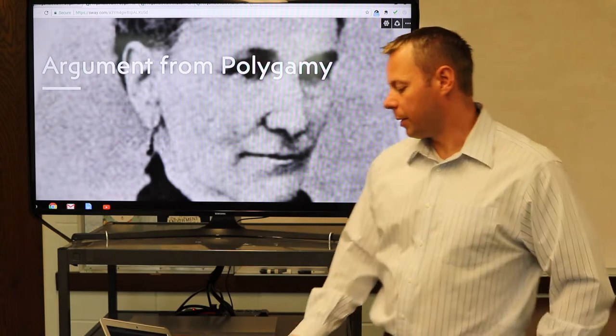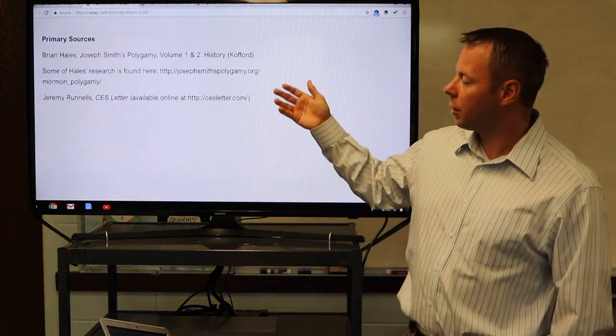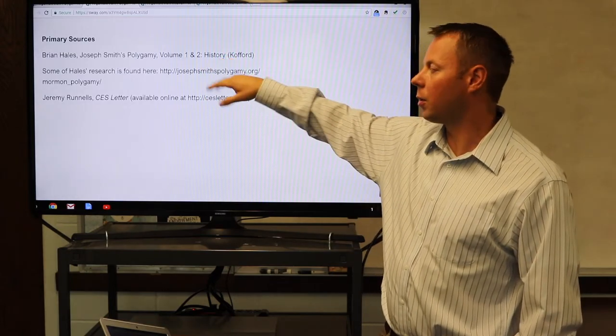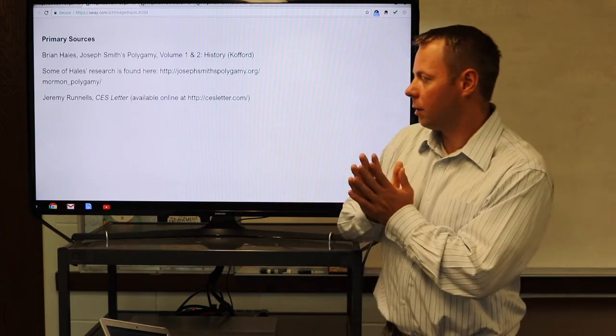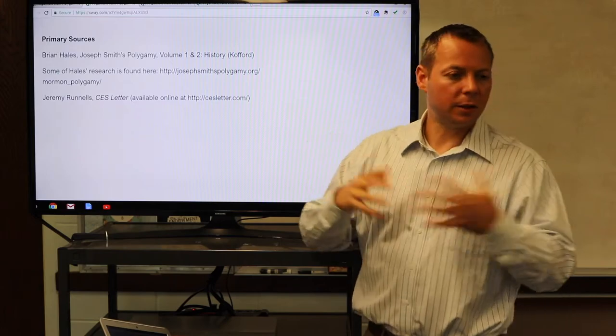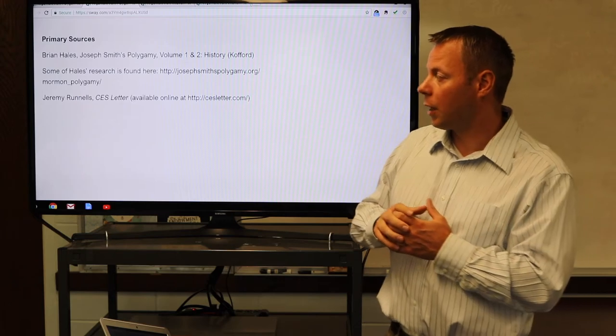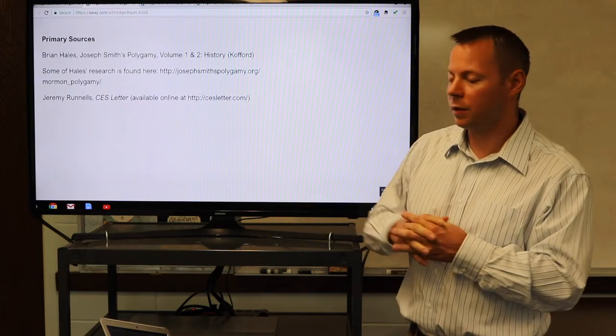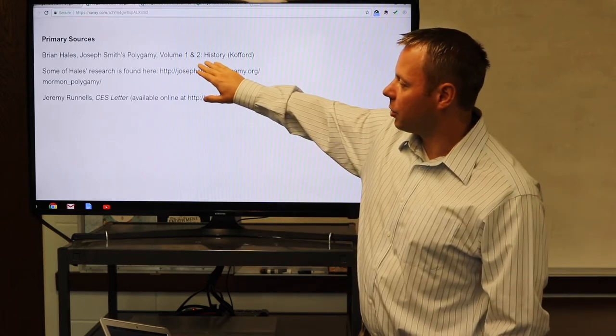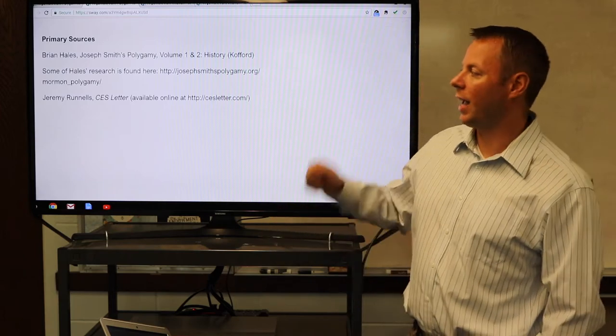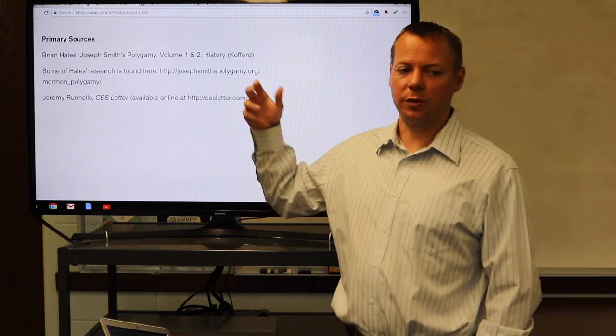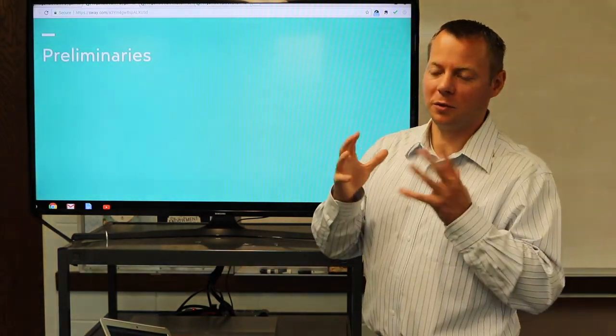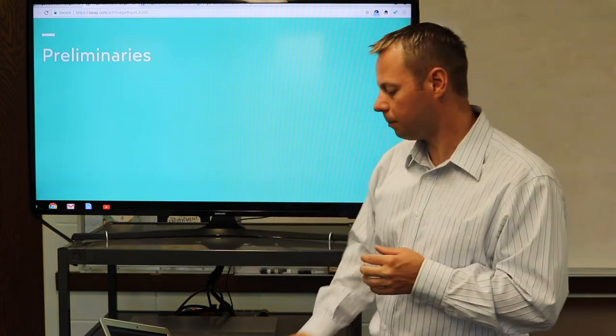Now we want to move to the argument from polygamy. Our sources here are Brian Hales, Joseph Smith's Polygamy, Volume 1 and 2. He has three volumes. One and two are the historical parts. The third is the theological part. From the critical side, Jeremy Runnell's CES letter. Brian Hales has done a great job pulling together every known historical document on this topic that we have. In terms of primary research, it's really indispensable. If people are not using it in their research, you can tell them they need to at least take account of all the research that he's done.